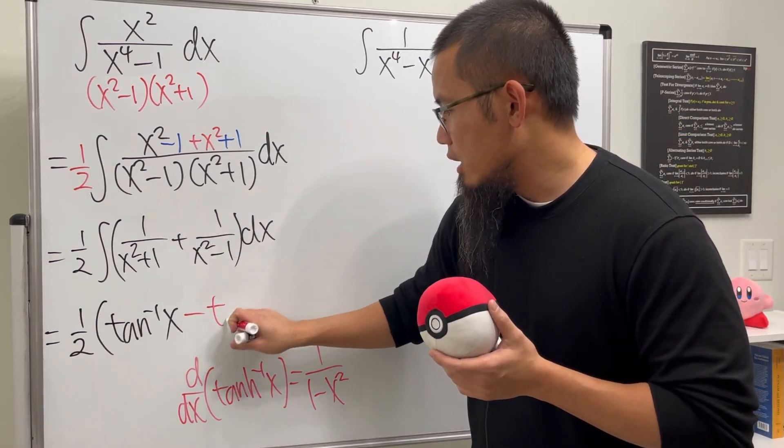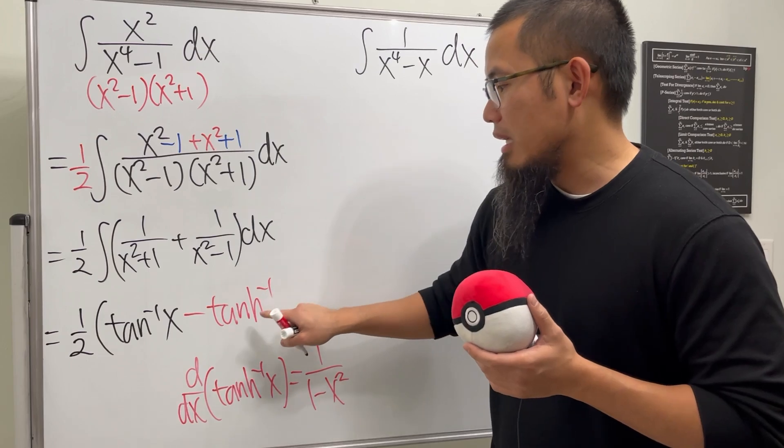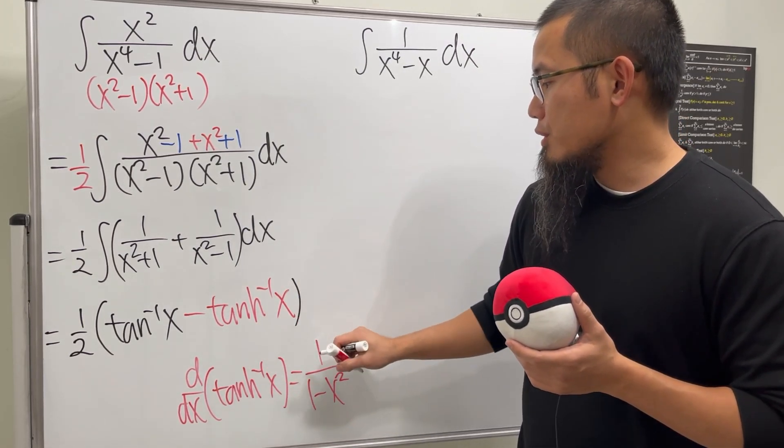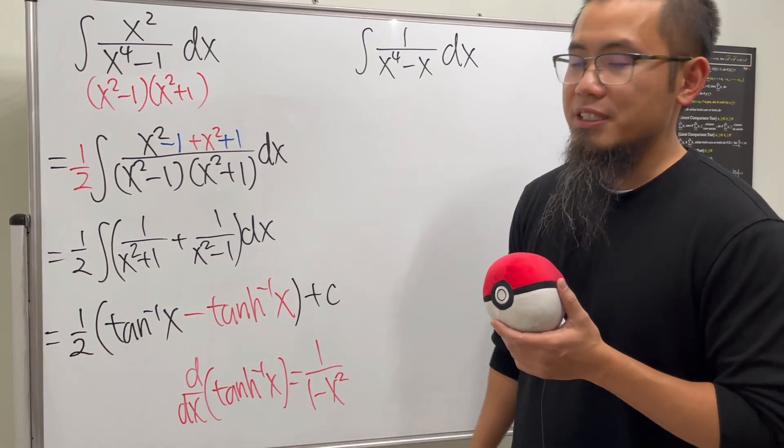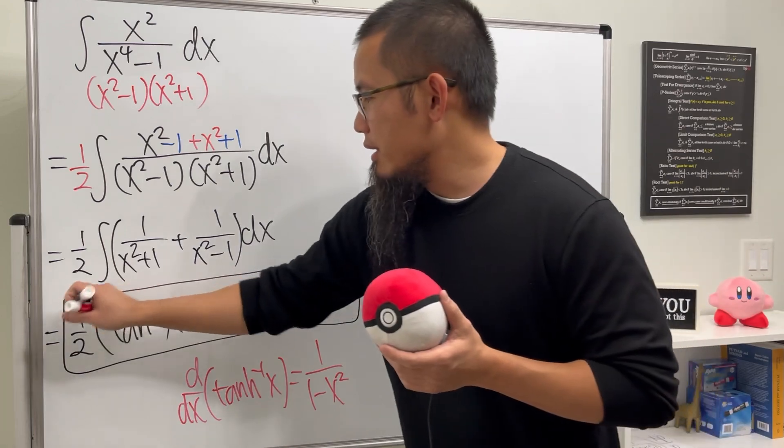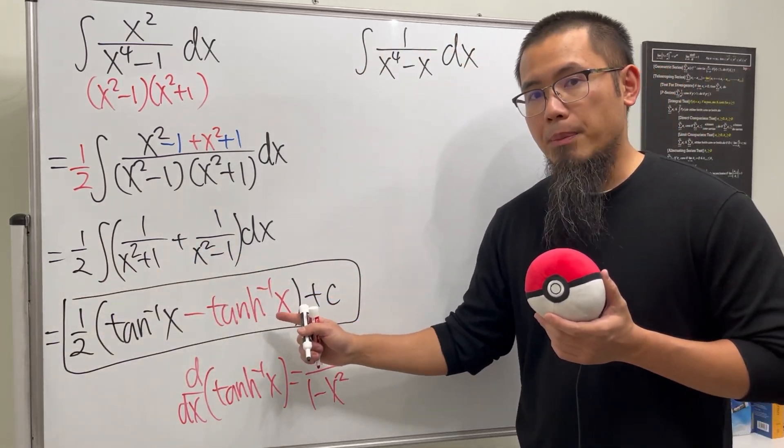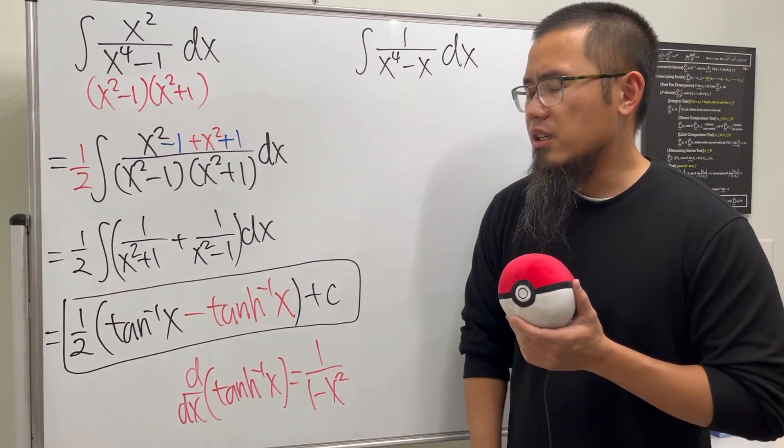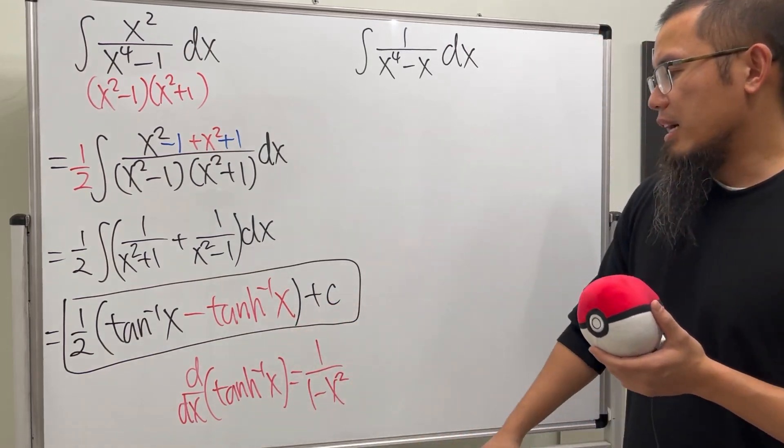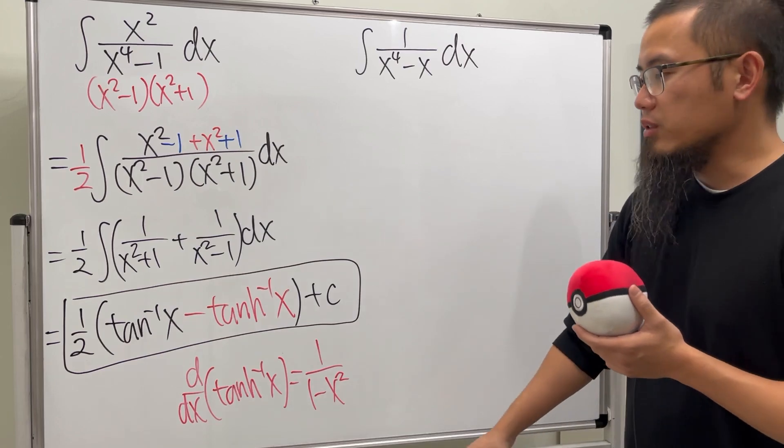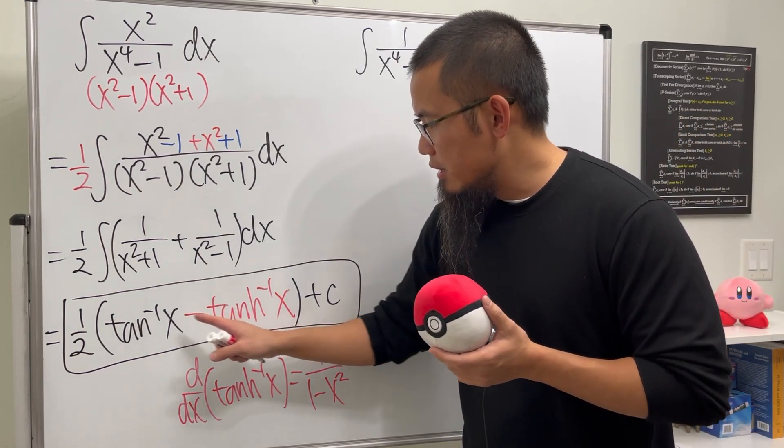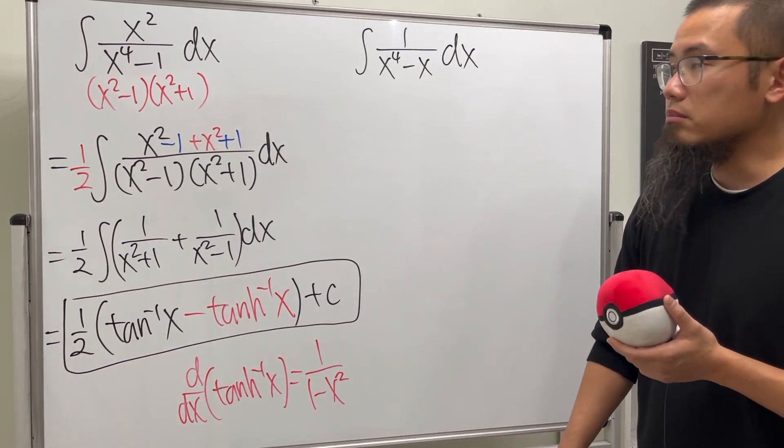So, this guy is going to be inverse tangent, but the hyperbolic version of it. And then we have the x. And then we're all done. Put a plus c. That's it. In fact, when you integrate this right here, and if you want to use the hyperbolic version for the answer, you have to be careful. I actually have another video going over that, so if you guys would like, you can check that out.